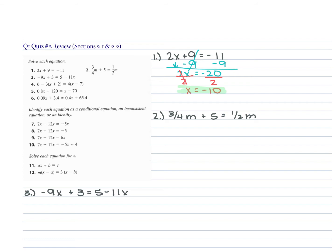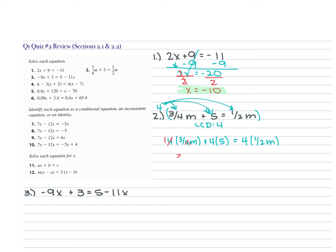If we were to get rid of the fractions, we're going to multiply the entire equation by the least common denominator. You have two denominators of 4 and 2 here, so your least common denominator is 4. You're going to multiply everything in that equation by 4: 4 times three-fourths M, 4 times 5, and 4 times one-half M. The 4 times three-fourths M — the fours cancel out and become 1s, so it's just 3M.